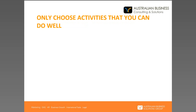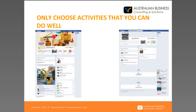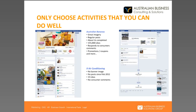What we encourage at ABC&S is for clients to choose one or two channels and focus on them really well. Here you can see two Facebook pages — one for Australian Bananas and one for an air conditioning company. Australian Bananas has great imagery, regular posts, promotions, and coupons — a really engaging site. As opposed to the air conditioning company, which has no banner images, no posts, and 15 likes. No matter what channel you choose, make sure that you do it well, and then when you've mastered that channel, you can move on to the next one.